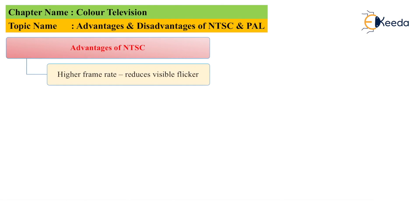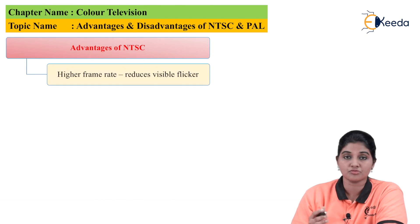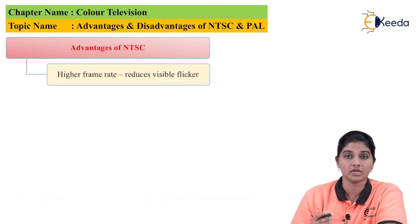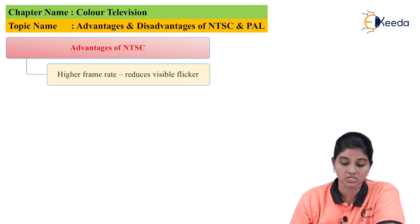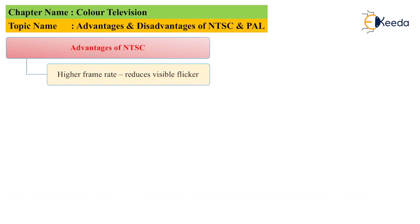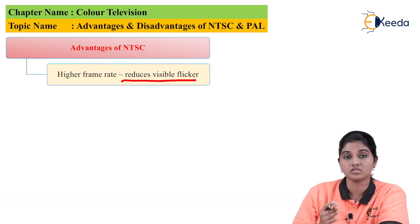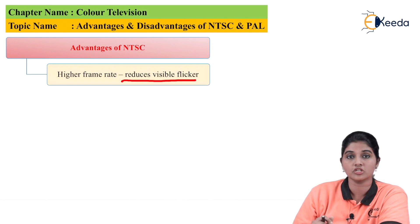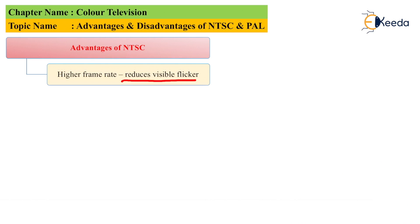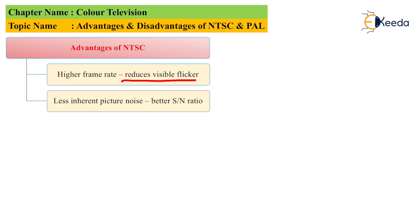The first advantage of NTSC is high frame rate — it provides a frame rate of 30 frames per second because it uses a frequency of 60 hertz. Because of that, there will be a reduction in the flickering effect, so reduced visible flicker is considered as one of the most important advantages of the NTSC system. The next advantage is less inherent picture noise, which results in a better signal-to-noise ratio.